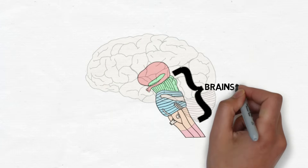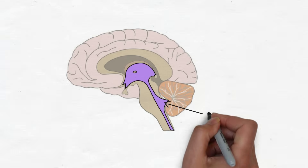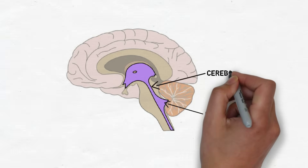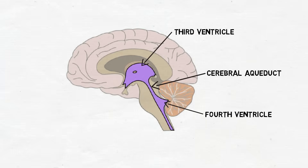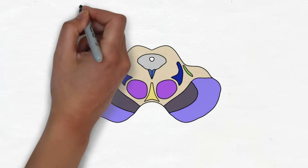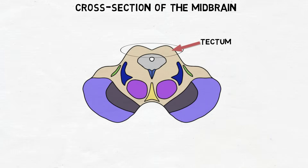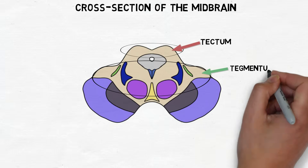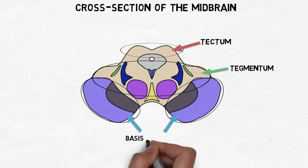The midbrain is one of the three divisions of the brainstem. At the level of the midbrain, the fourth ventricle has narrowed to form the cerebral aqueduct, which connects the third and fourth ventricles. The region of the midbrain behind the cerebral aqueduct is called the tectum, the area in front is called the tegmentum, and the anterolateral portion is made up of two structures called the basis pedunculi.